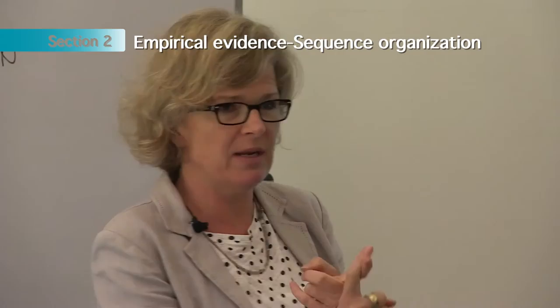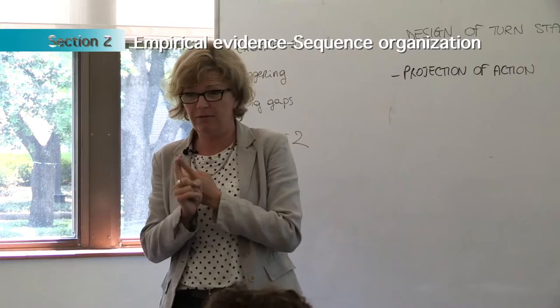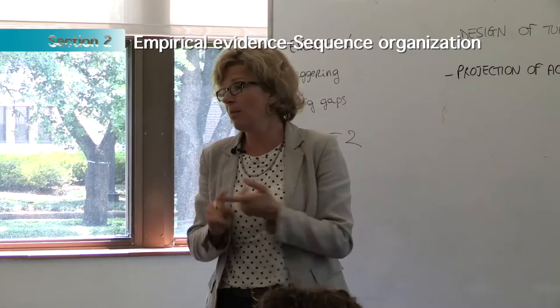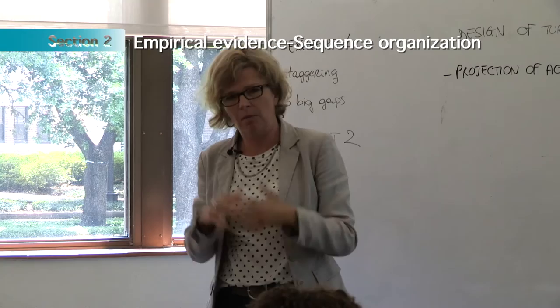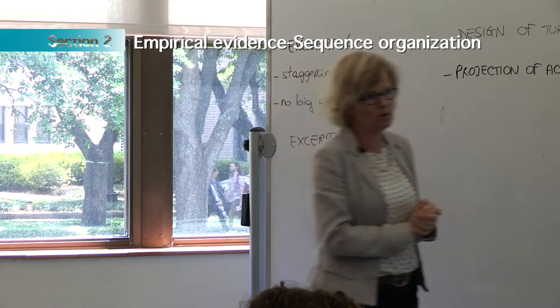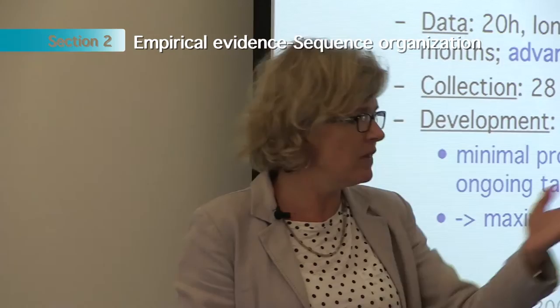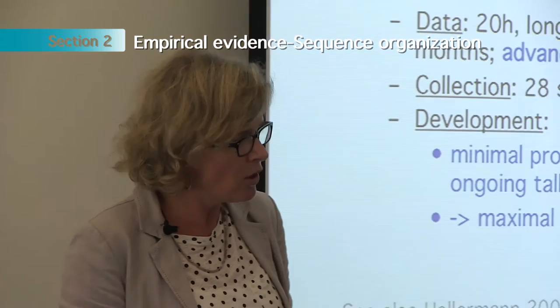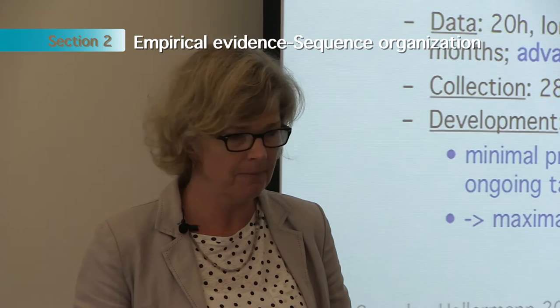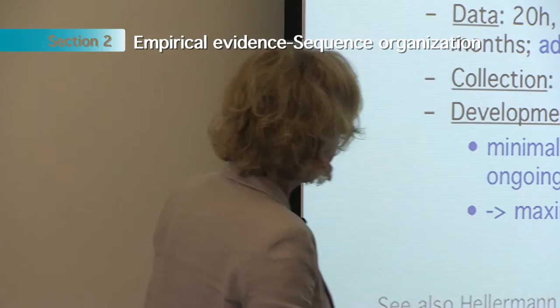When we open a story, we have to: A, suspend the turn-taking machinery — we need a lengthy turn, so we signal that we need the floor. Then B, we need to make sure our interlocutor understands what we're going to tell is relevant. We can say 'oh, funny thing happened' or 'it's really sad' — whatever we do, we use techniques for making what we're going to say relevant. We project some aspects of the telling, and we also signal how it's fitted to what we've just been talking about: 'oh, this reminds me' or 'talking about John.' If we don't do all this work, either we don't get a longer floor or we disrupt the conversation — story tellings might come in in medias res and sound very disruptive.